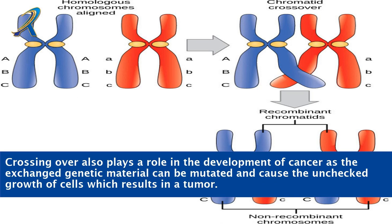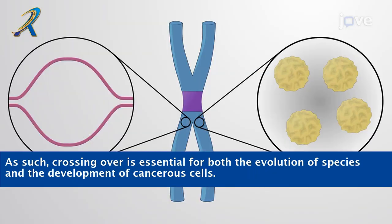Crossing over also plays a role in the development of cancer, as the exchanged genetic material can be mutated and cause the unchecked growth of cells, which results in a tumour. As such, crossing over is essential for both the evolution of species and the development of cancerous cells.